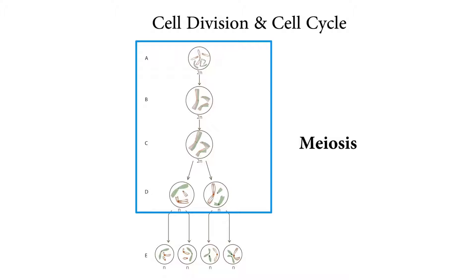As a result of mitosis, what would have been the result? 23 pairs and 23 pairs in each nucleus. Here in meiosis it is 23 chromosomes and 23 chromosomes — no pairs.